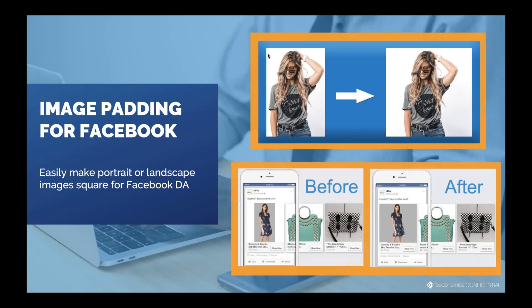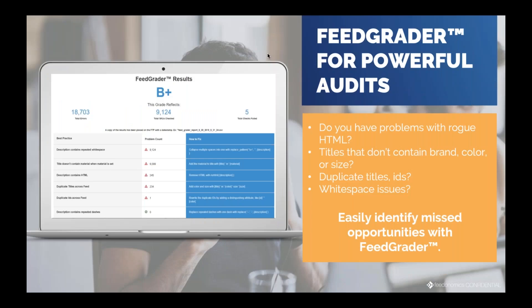One interesting thing we've added for Facebook specifically is the ability to add image padding. This is a problem that almost anyone in the fashion or apparel space has dealt with — you have rectangular images that are portrait or landscape, but Facebook specs require square images in a certain resolution. What we can do is take the current background of the image and extend it to make portrait or landscape images square, not just for Facebook but also for Instagram. This makes images look significantly nicer, which of course improves click-through rates and return on ad spend.